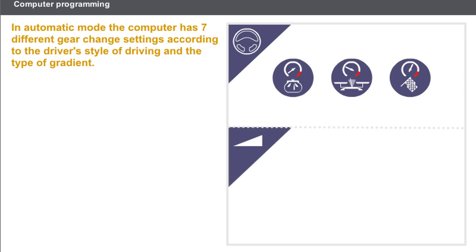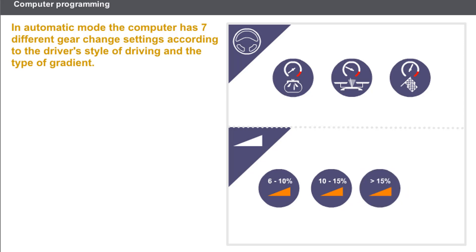The four other settings are based on the gradient. Gradient setting one corresponds to a slope of six to ten percent. Gradient setting two corresponds to a slope of ten to fifteen percent. Gradient setting three corresponds to a slope of more than fifteen percent. Finally, the descent setting is used from minus ten percent.